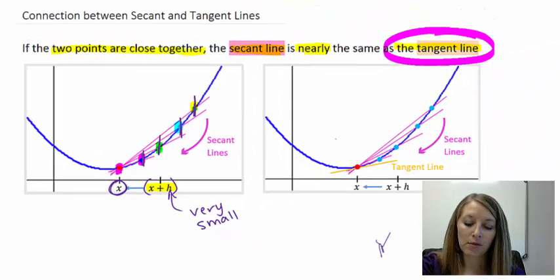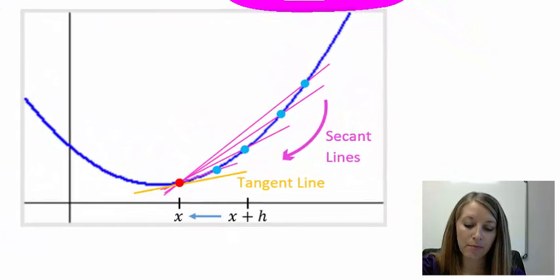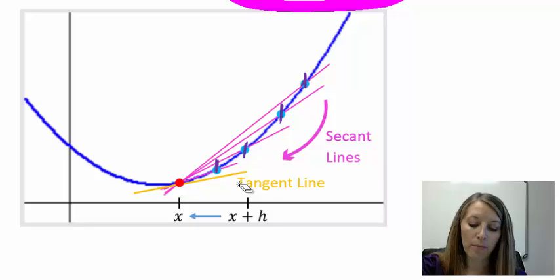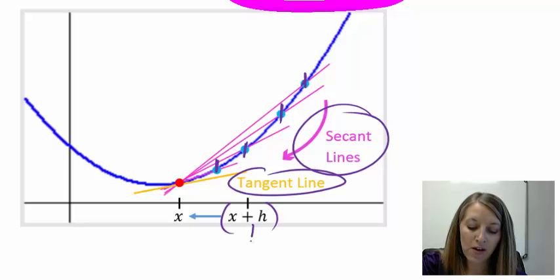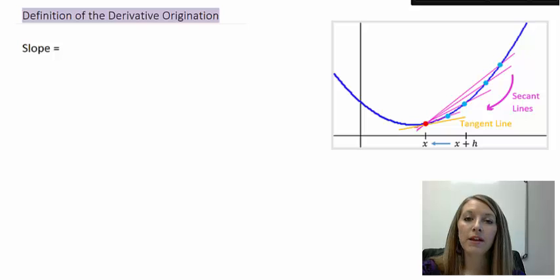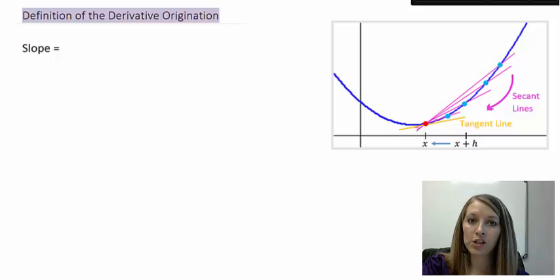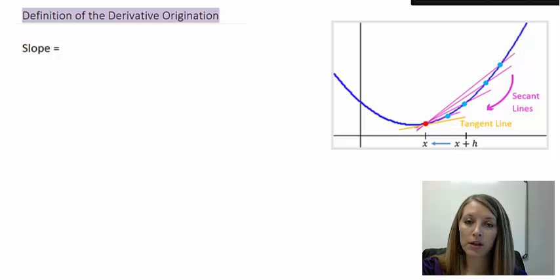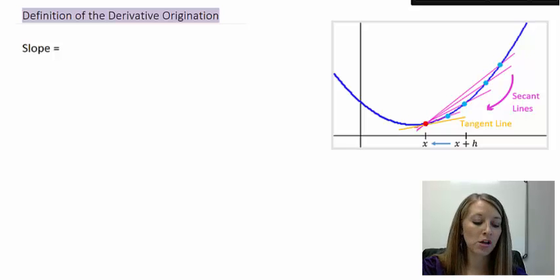I want x plus h to get smaller and smaller so that h eventually disappears and I end up with just my x value. I have the same points in question — first, second, third, fourth — and the smaller those h values get, the closer I get to the tangent line. So let's set up this scenario in function format. I want to compute the slope of my secant lines and make them smaller and smaller, using two points and the college algebra slope formula.